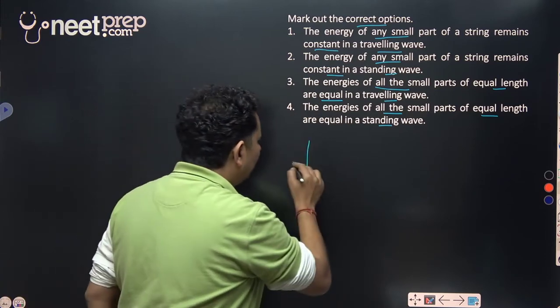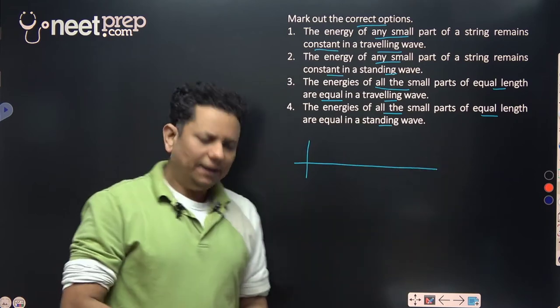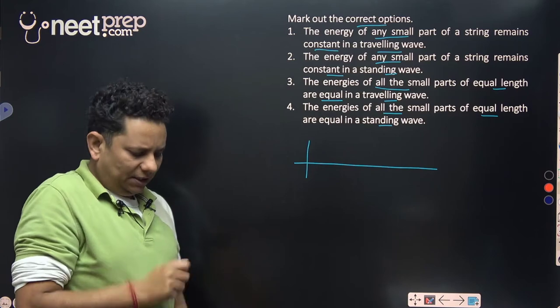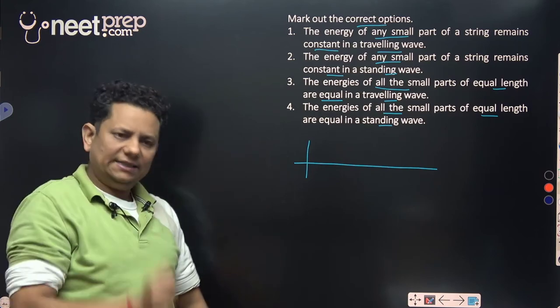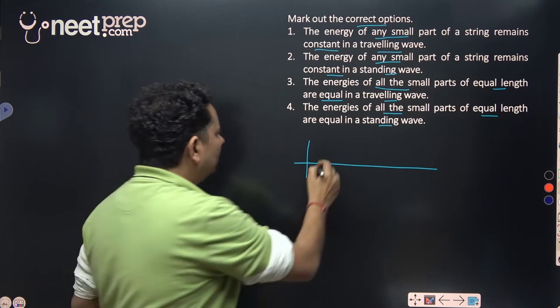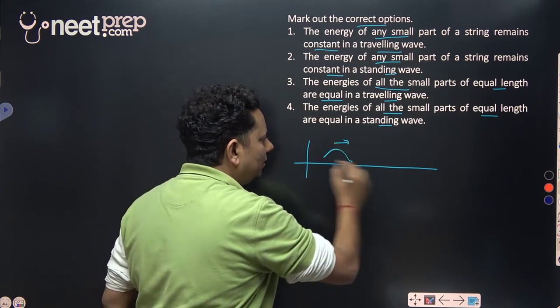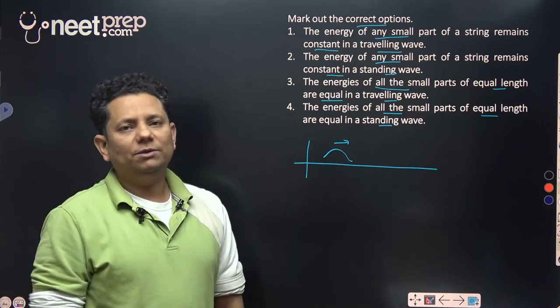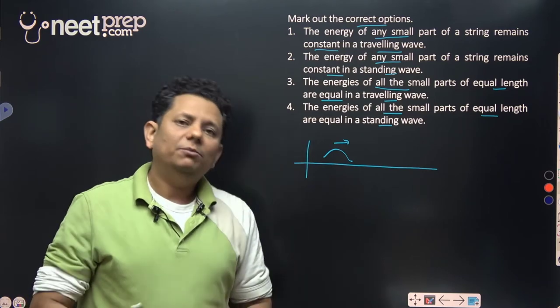For example, you have a traveling wave. In a traveling wave, suppose I produce a wave here at point A, and a pulse is produced here. So what happens is the pulse travels from here to there.